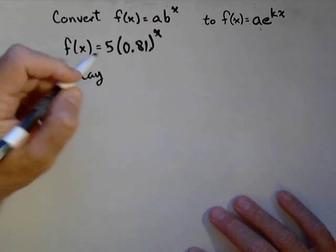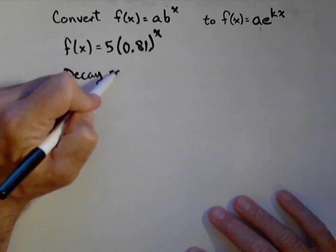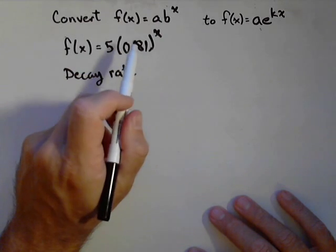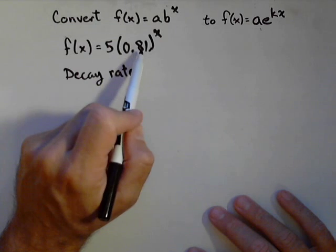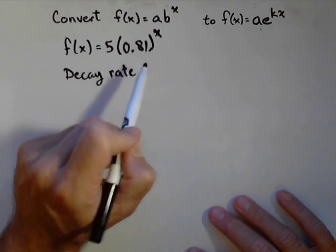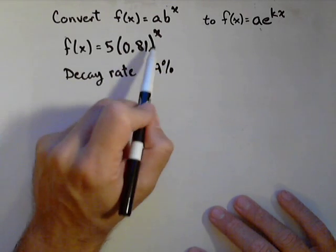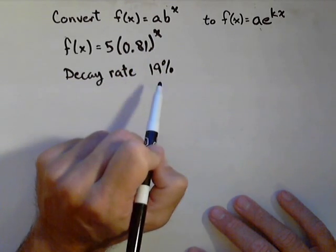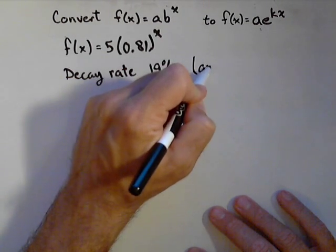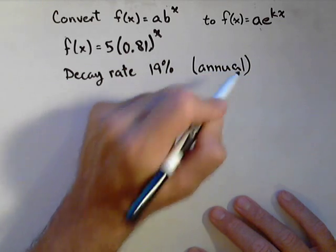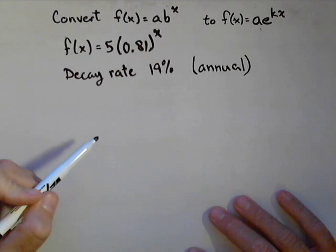Notice here the base is less than 1, so we have a decay rate — some exponential item that is decaying. Our decay rate is not 81%, because that's the amount left. It's 1 minus 0.81, which is 0.19, or a decay rate of 19%. Depending on what X is measured in is what this decay rate will be in — if X is in years, this is an annual decay rate; if X is in months, it's a monthly decay rate.